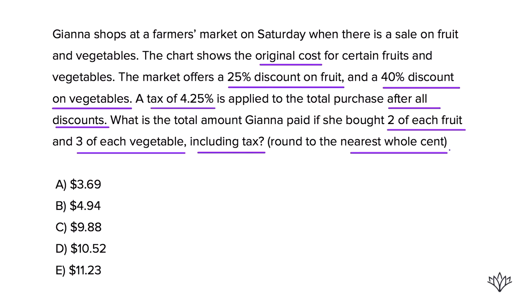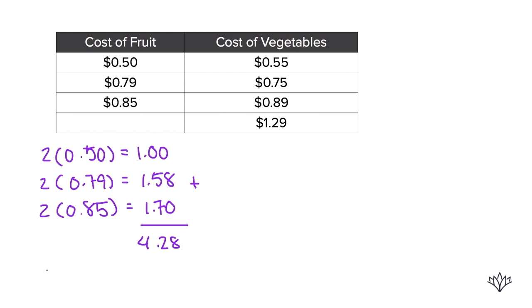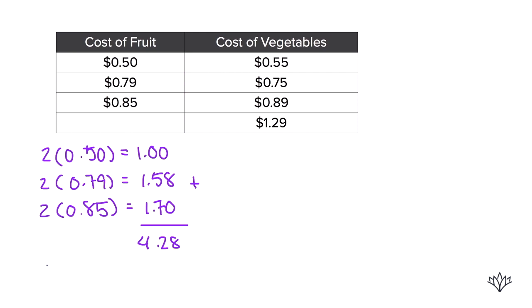Now let's apply the discount. The fruit discount is 25%. Here's a time-saving tip: if you're taking 25% off something, you're keeping 75% of it — because 100 minus 25 is 75. So we only pay 75% of $4.28. That's 0.75 times $4.28, which equals $3.21. That's the cost of the fruit with the discount applied.